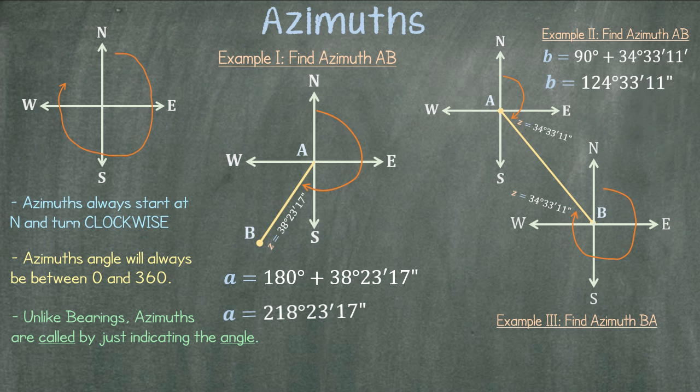This time we have three full quadrants in addition to the given angle. Therefore, 270 degrees plus 34 degrees 33 minutes 11 seconds is equal to our azimuth angle of 304 degrees 33 minutes 11 seconds.